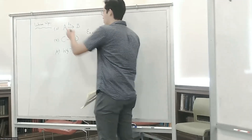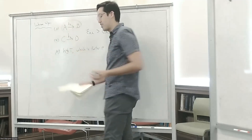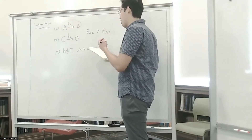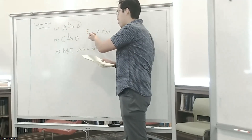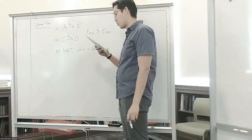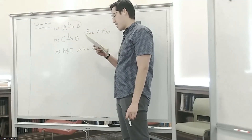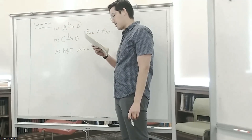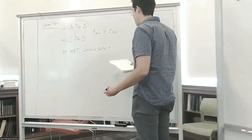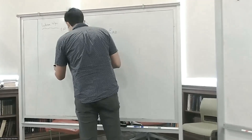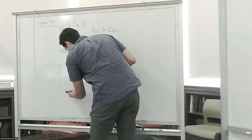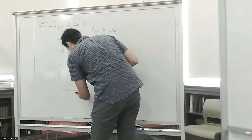The answer is one. Reaction one, which has the greater activation energy, will proceed more quickly. The reason is that reactions with higher activation energies are more sensitive to changes in temperature. If we represent this as an Arrhenius plot with the natural log of k versus one over temperature, and k equals A times exponential of negative Ea over RT...